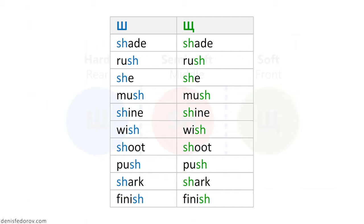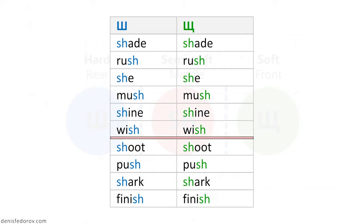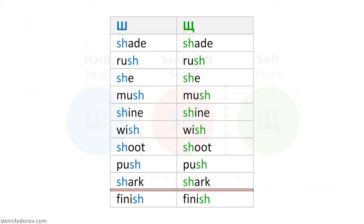For that, we do not necessarily need the Russian language for now, so let me pronounce pairs of English words but with SHA and SHA instead of an SH. Listen carefully: shade / shade, rush / rush, she / she, mush / mush, shine / shine, wish / wish, shoot / shoot, push / push, shark / shark, finish / finish.